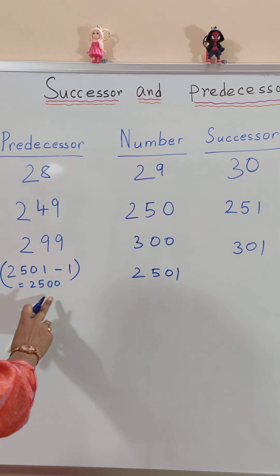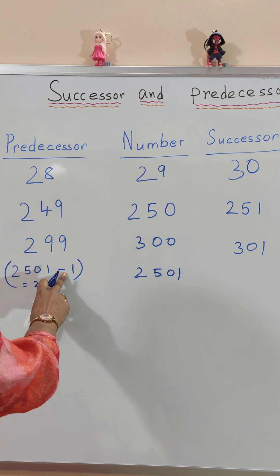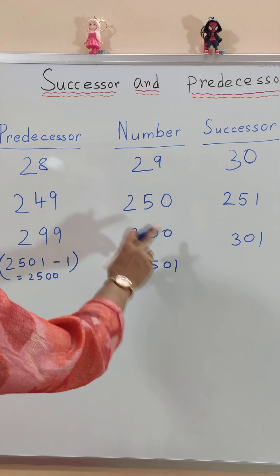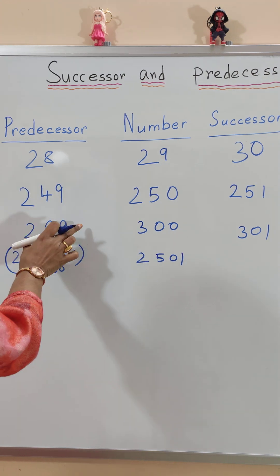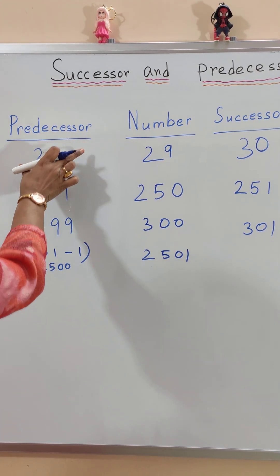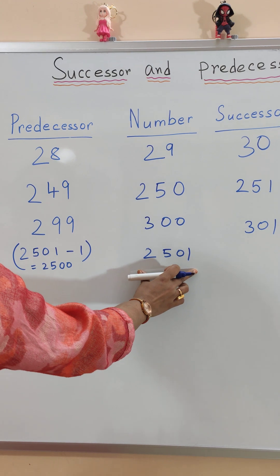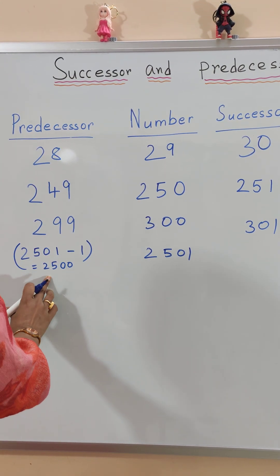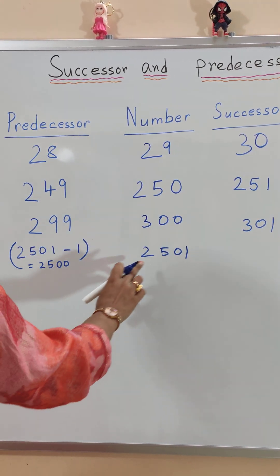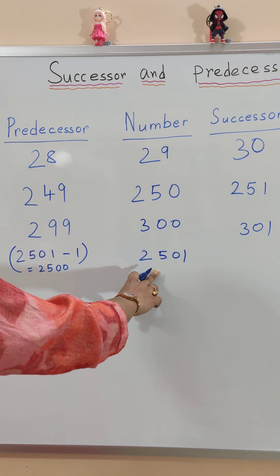So how we find it out, we just subtract 1 from the given number. Then we get the predecessor. We know that the before number is the predecessor. But now in case of bigger numbers, we just subtract 1 to find the predecessor of the given number.